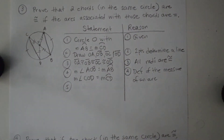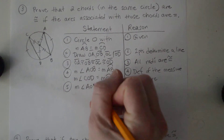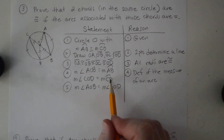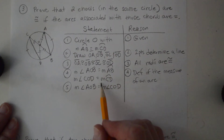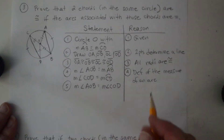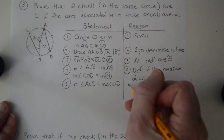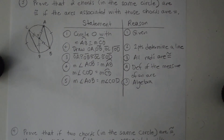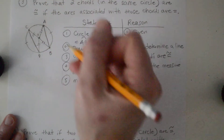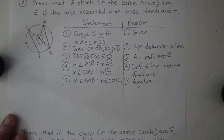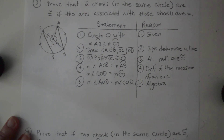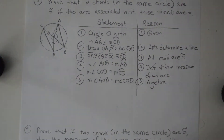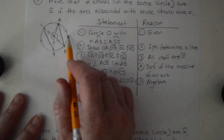Step five: the measure of angle AOB equals the measure of angle COD. We already know the measure of arc AB and arc CD are congruent from the given, so by the transitive property of equality — we'll just call it algebra or substitution. Note we are not saying these angles are congruent because they're vertical angles; they aren't necessarily. They're congruent because the intercepted arcs are congruent.